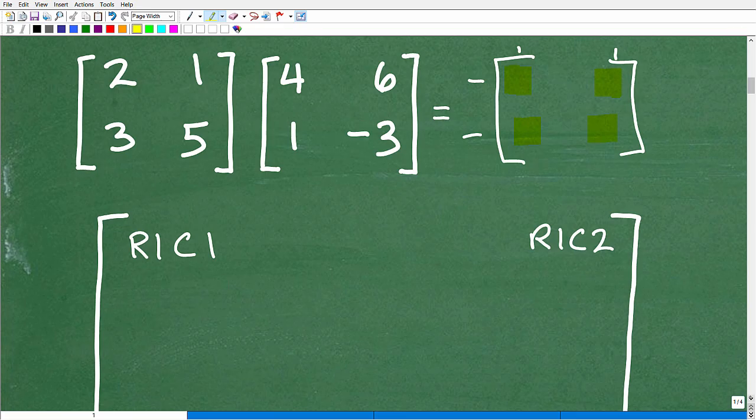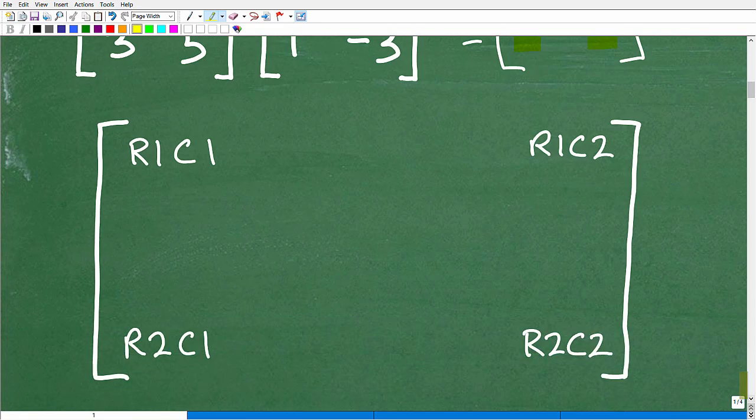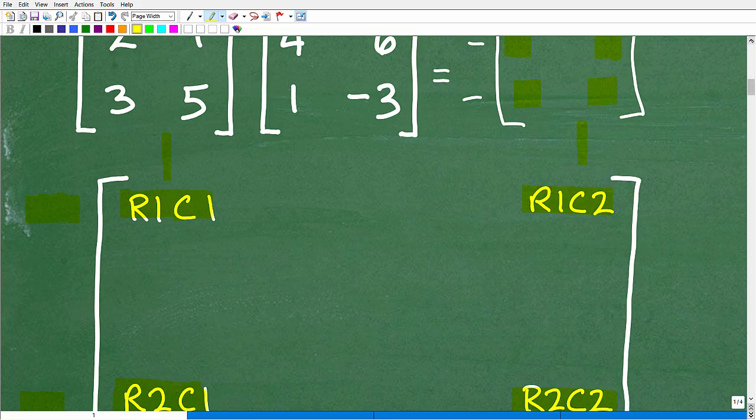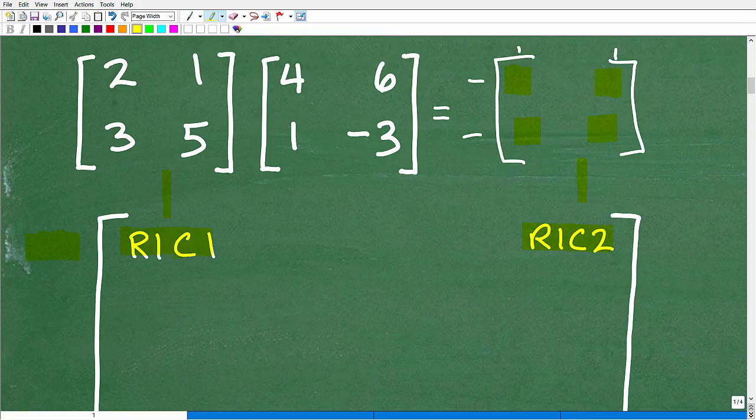This is kind of like a template for our answer. What is the location of this upper left corner here? This is row 1, column 1. The position of this right here is row 1, column 2. Here, we're on row 2, column 1. And right down here, we're on row 2, column 2. That's kind of the location of anything that we have in terms of a 2x2 matrix.